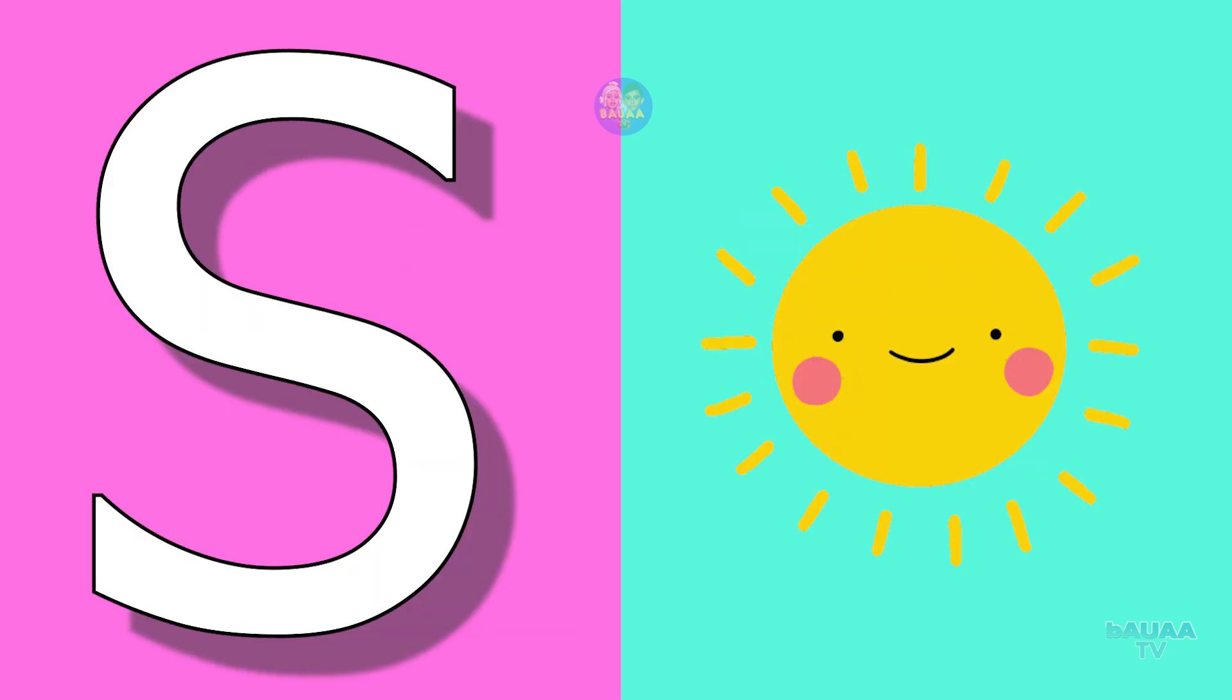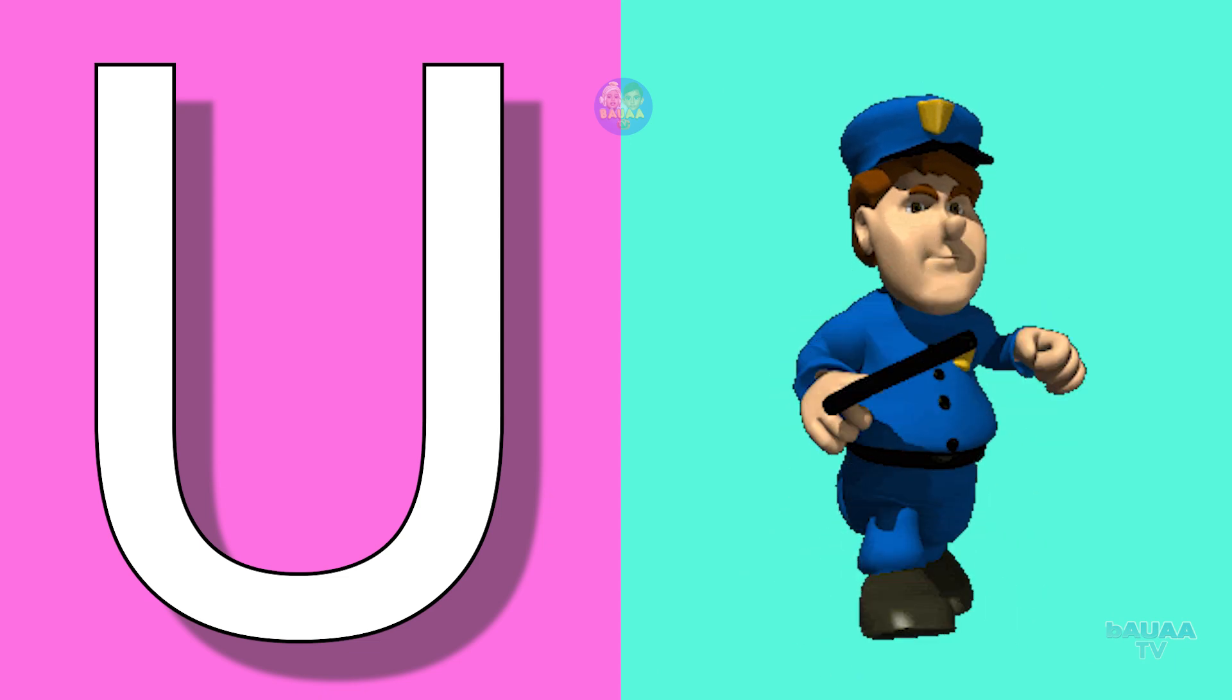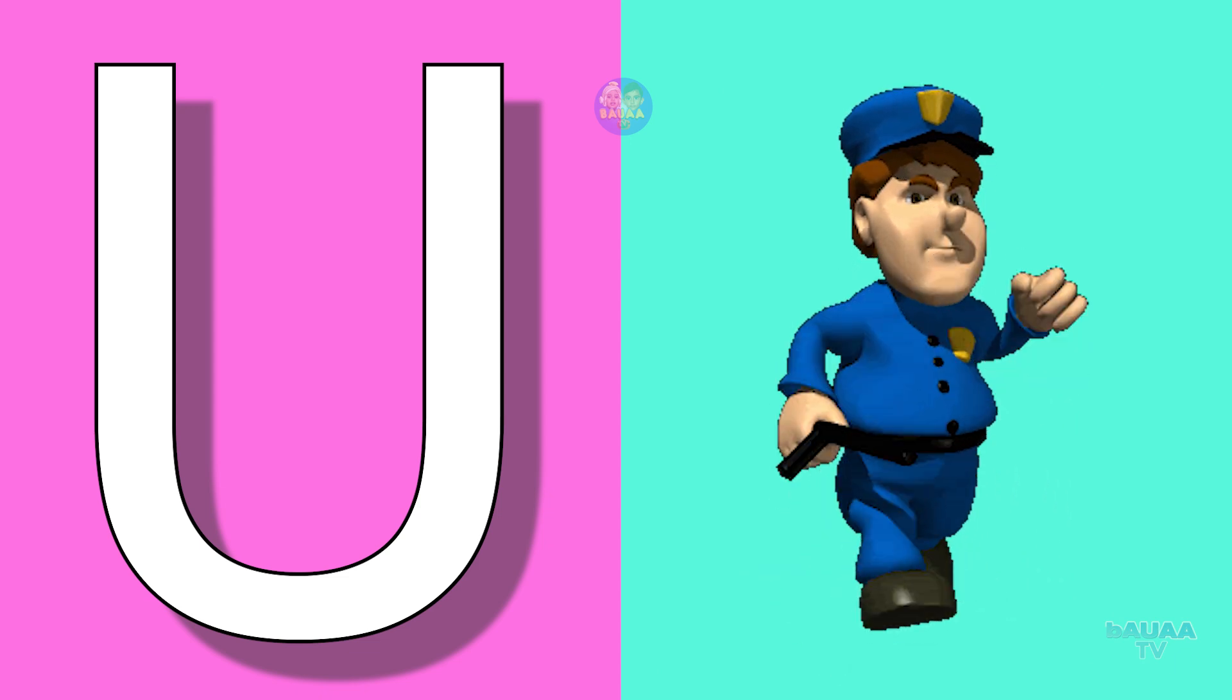Rabbit means kargosh. S for sun, sun means surya. T for toy, toy means kilone. U for uniform, uniform means worthy.